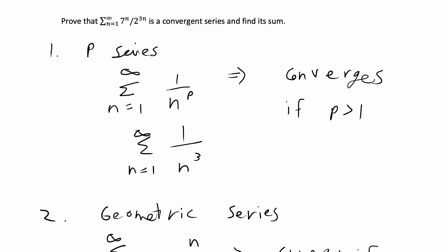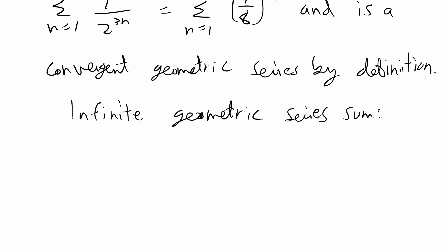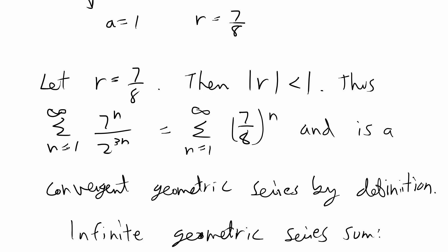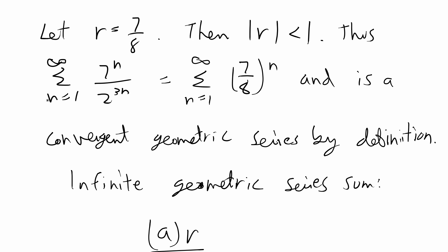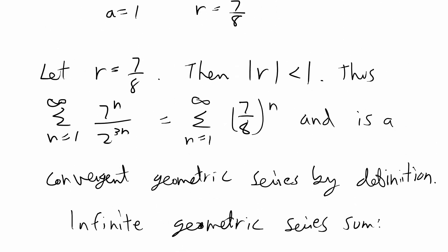Now we have done the first half of the problem, which is prove that the infinite series converges. For the second part, we have to find the sum. That also has a formula: for an infinite geometric series, the sum is given by the formula a times r over 1 minus r. This is for the infinite series where the index starts at 1 and goes to infinity, so you want to make sure you have the correct index.